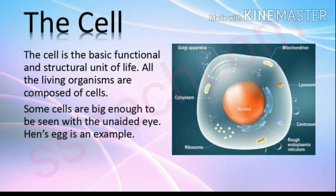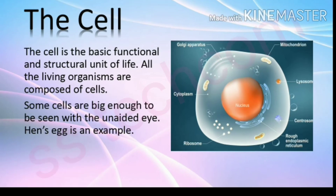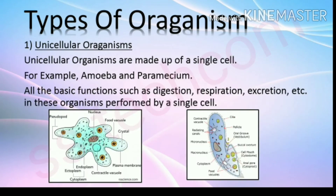All living organisms are composed of cells. Some cells are big enough to be seen with the naked eye — for example, an egg. Types of organisms: first, unicellular organisms. Unicellular organisms are made up of a single cell, for example amoeba and paramecium. All basic functions such as digestion, respiration, and excretion are performed by a single cell.